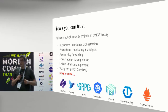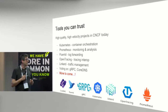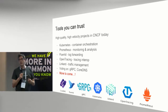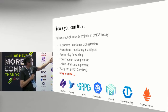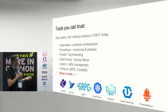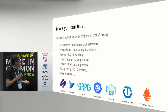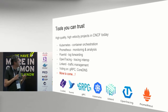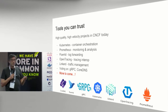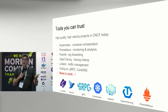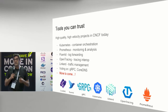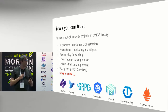Going back to the list I showed at the beginning, we now have seven tools in CNCF. Kubernetes for container orchestration. Prometheus for monitoring and analysis. FluentD for log forwarding. OpenTracing for interoperable tracing. Linkerd for traffic management and proxies. And GRPC and CoreDNS are now in the CNCF — respectively a transport and a DNS server. And there's more to come — in fact, there may be more to come this week.